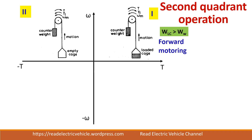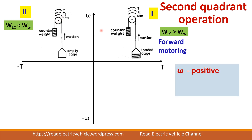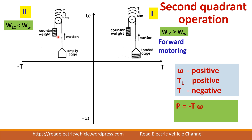In the second quadrant, we move the empty cage upward. Speed is positive. Here the counterweight is heavier than the empty cage, so the load torque is positive (acts in the counterweight's direction). Without control, the empty cage would rise at dangerously high speed. The motor must apply braking torque in the opposite direction to limit speed. T is negative and ω is positive, giving negative power — this is forward braking.